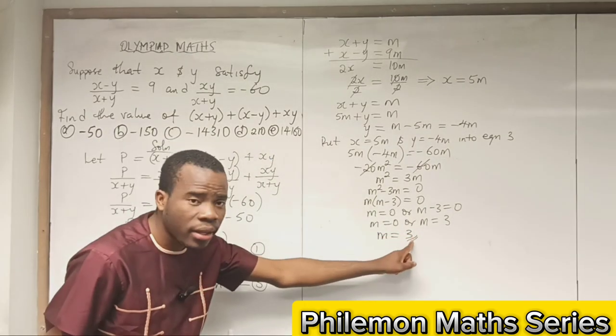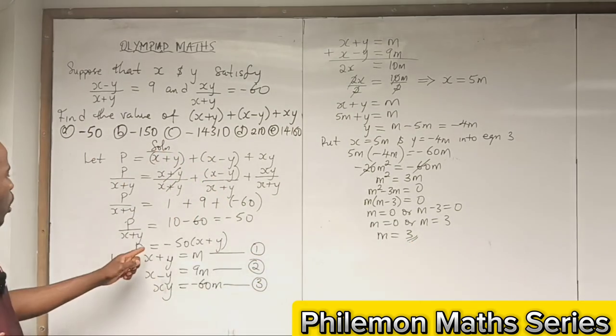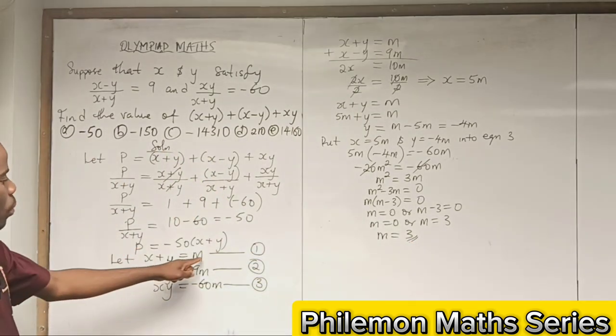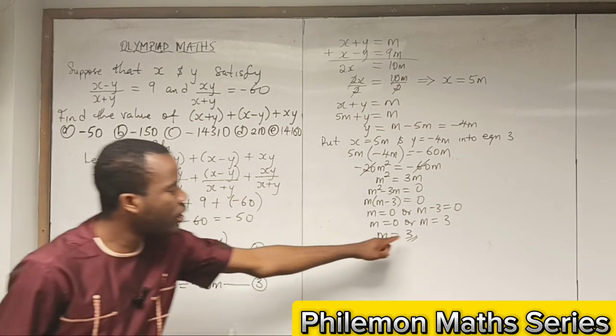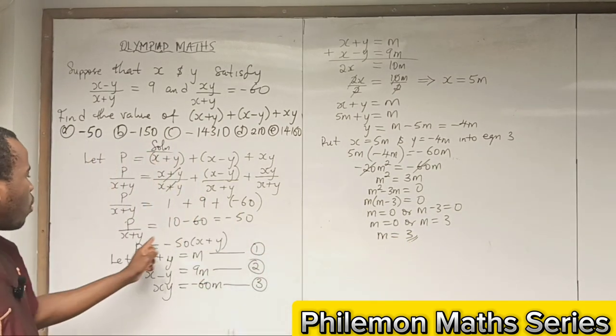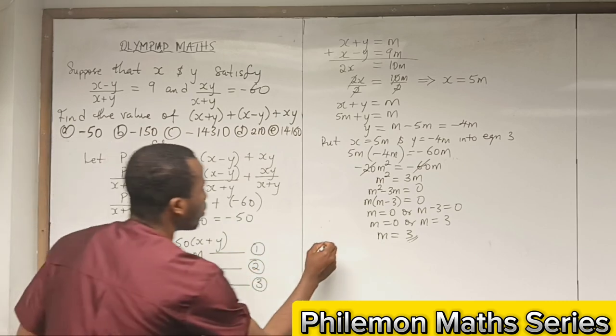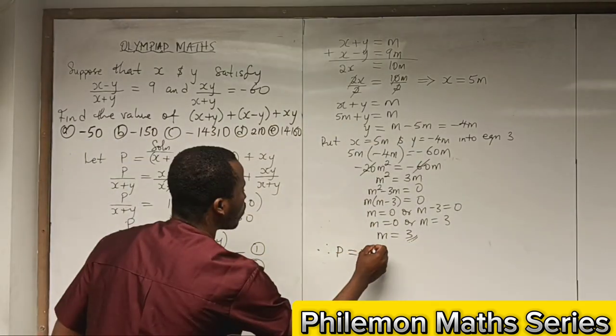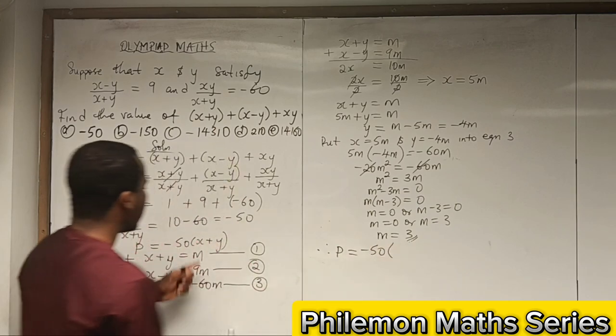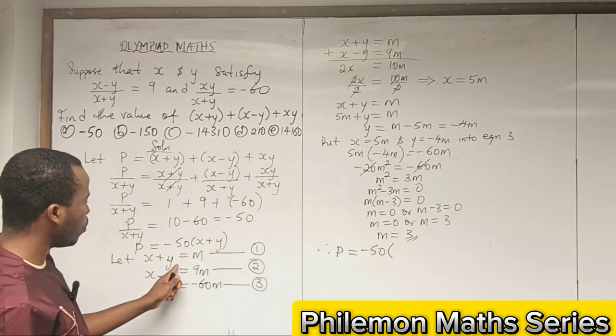Since m = 3 and we called (x + y) = m, it means x + y = 3.